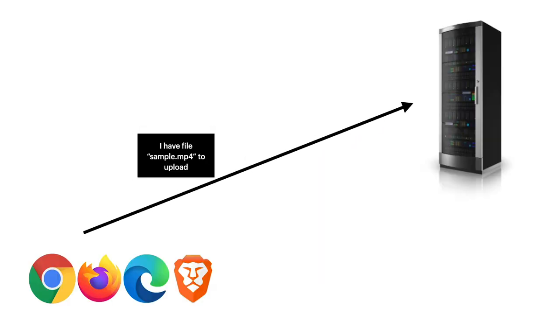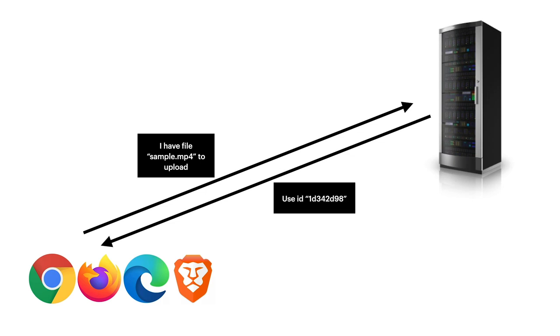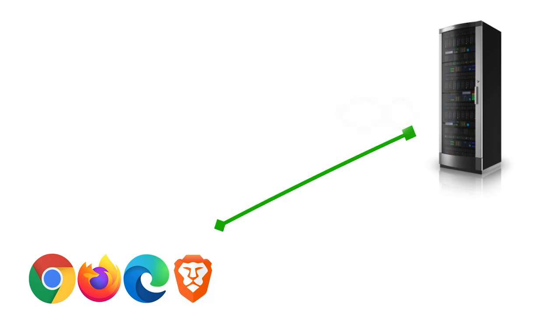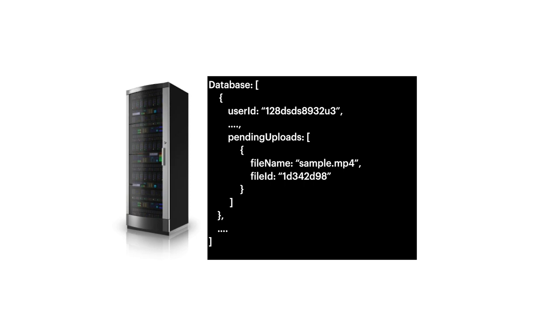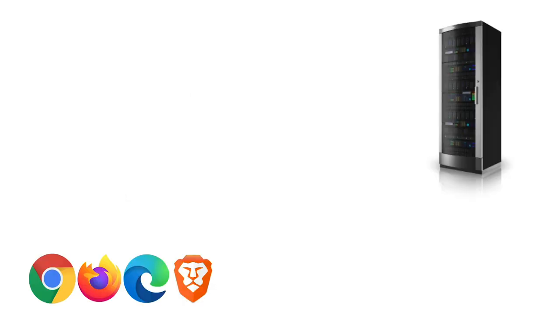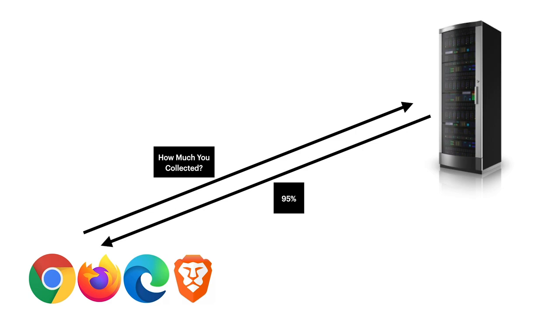One thing we can do is before we start an upload we tell the server first — hey, I have these files to upload — then the server responds with an id for each file that we pass along during upload. The server can store these IDs with user data in the database, so if the user loses internet mid-upload, next time they log in this information is sent with the user and can be used to display which uploads they can resume. Then they can do it when they want and have a more reliable connection. When trying to resume for a specific id, we ask the server what it got so far and it responds with the file size it currently has.